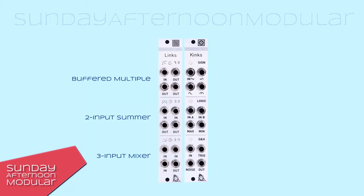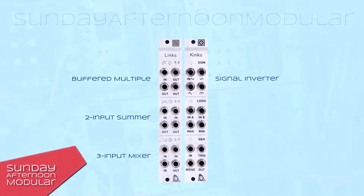Now let's go to the Kinks. The Kinks comes with a sine section. This section consists of a signal inverter which will invert the incoming signal, and half and full wave rectifiers which will change your incoming signal. This can be used to change and add overtones to audio signals or create new LFO shapes.